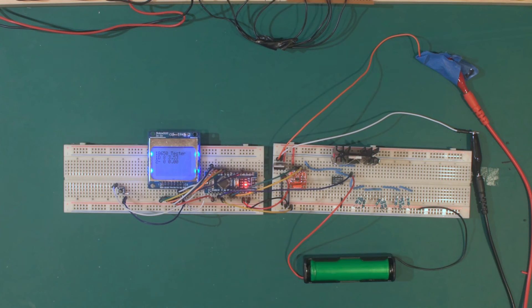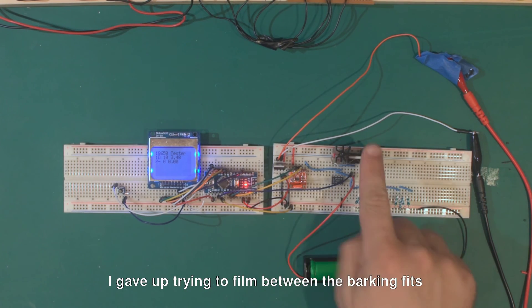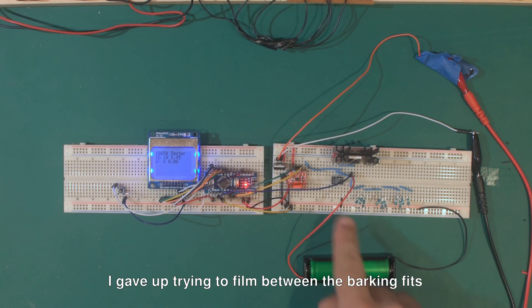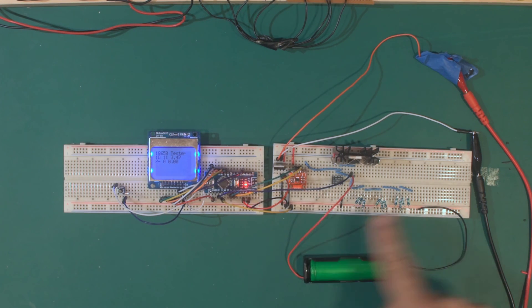So before I jump too much further into building this onto some perf board and solidifying the design, I started to think a bit more about where could this go next. I know that I can build two dischargers onto this setup with the additional digital to analog converter and the extra FET and resistors. But I do also have a number of outputs on this Arduino still.